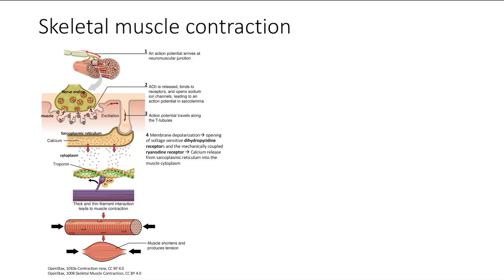We've discussed a brief overview, but now we're going to go into the nitty-gritty details of skeletal muscle contraction. An action potential comes down the nerve, which is going to cause acetylcholine release. Acetylcholine goes to the muscle acetylcholine receptors, and that's going to cause an action potential that travels down the T-tubules.